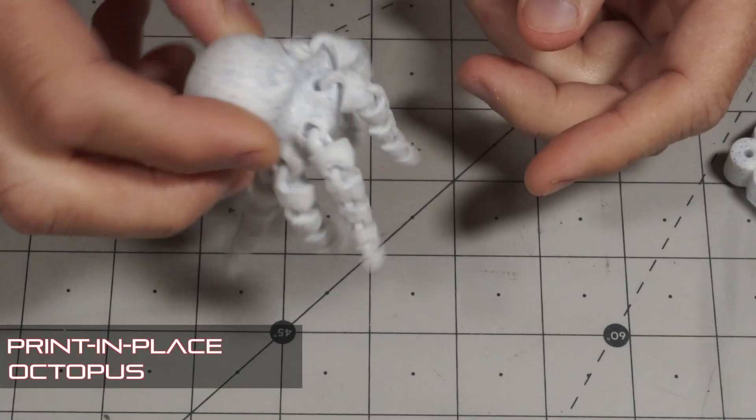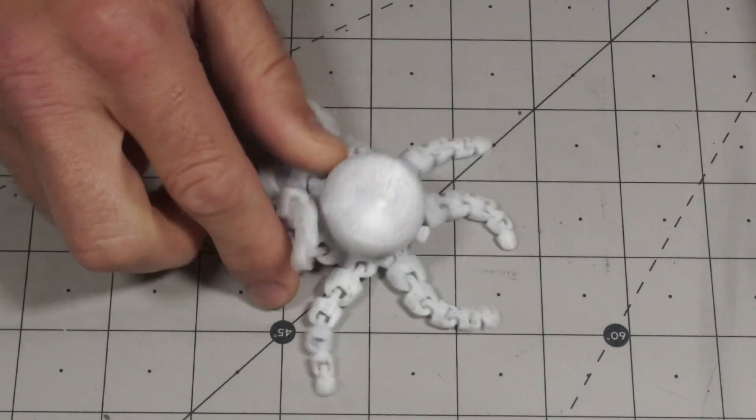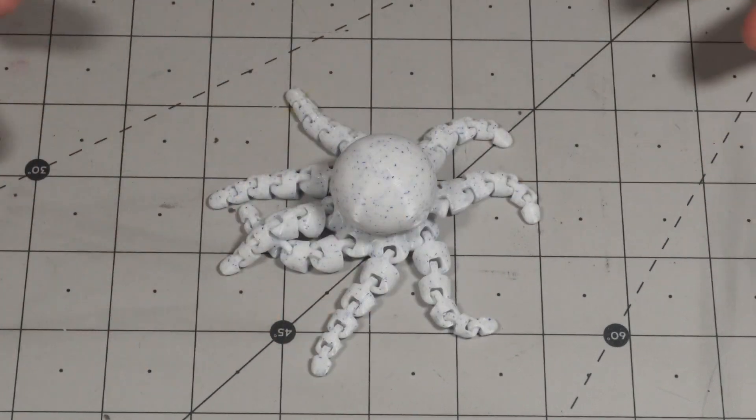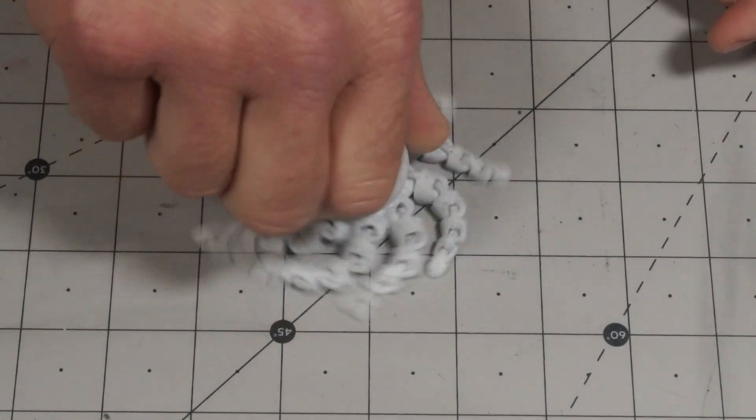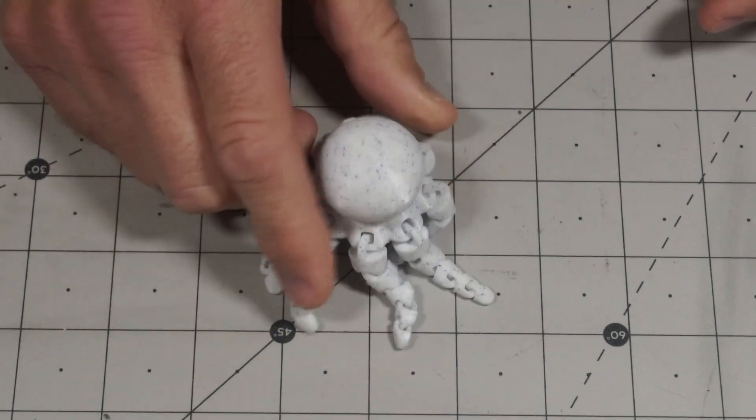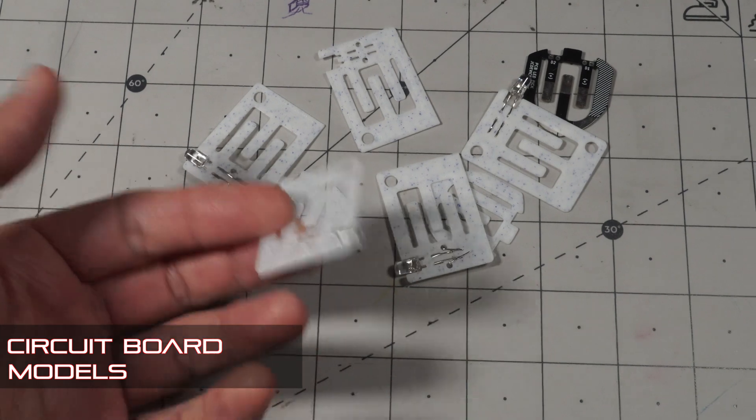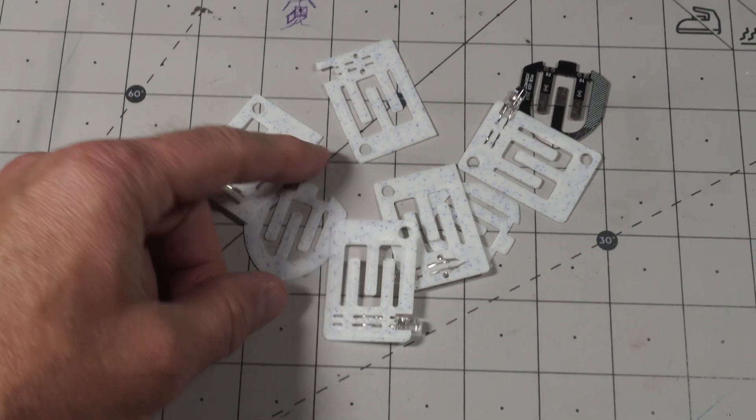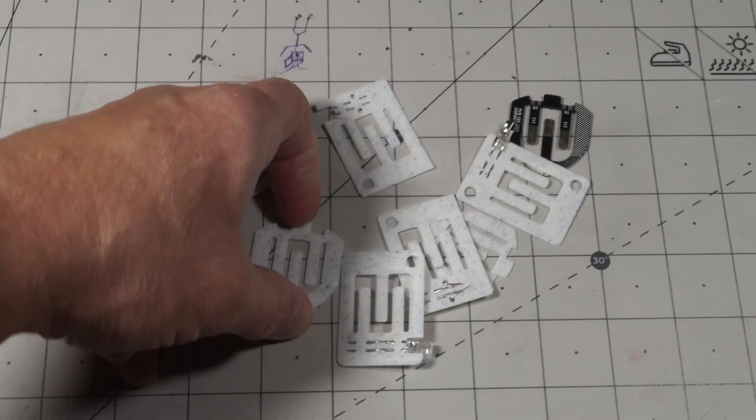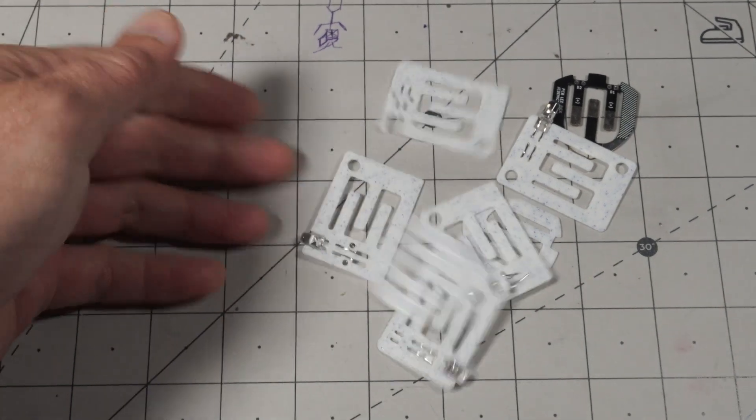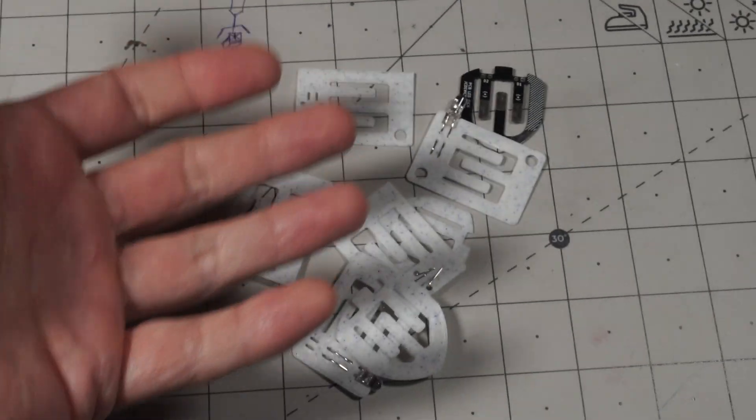Print in place octopus looks kind of awesome. I mean, I just basically printed this, pulled it off the printer and it's got these articulated legs. It's been so far pretty much a flawless printer. These 3D prints are models for a circuit board that I'm going to be coming out with hopefully soon. So hopefully you'll see more of that soon. But yeah, it should be a cool one. Or a couple actually.